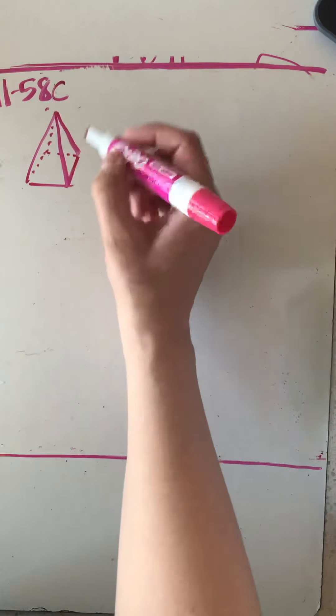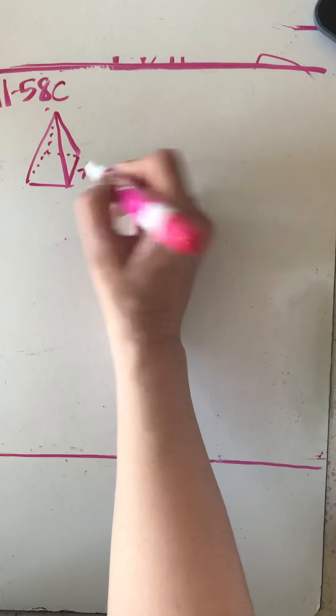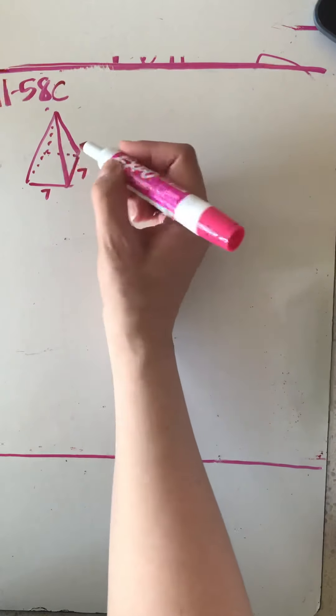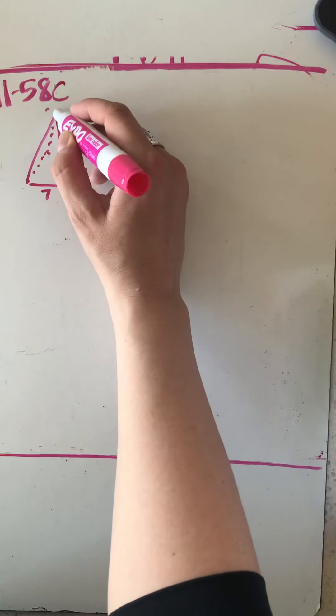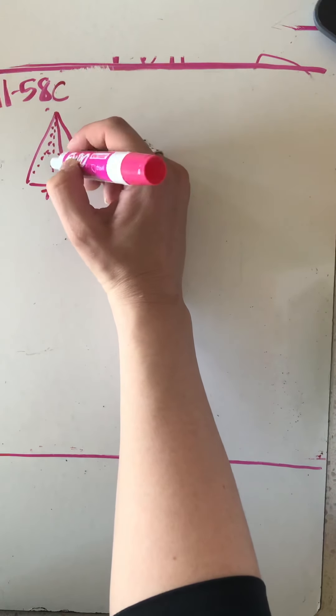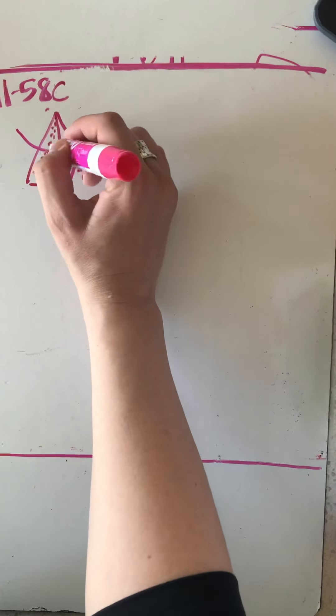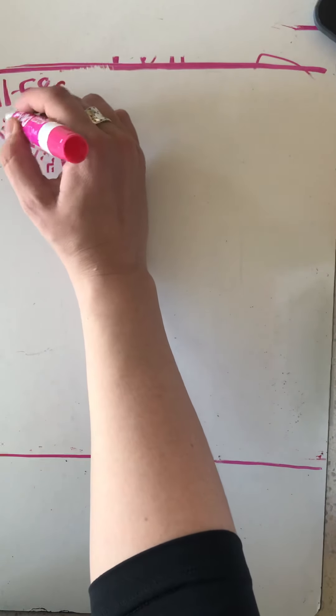Alright, so the diagram tells me that the edge of the square is seven and because the base is a square all the sides are going to be seven. It also tells me that the height which always drops down and creates a right angle is nine. So h equals nine.